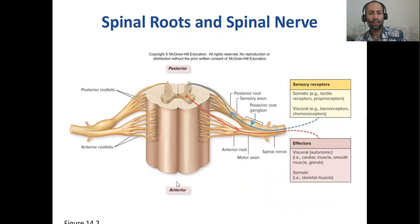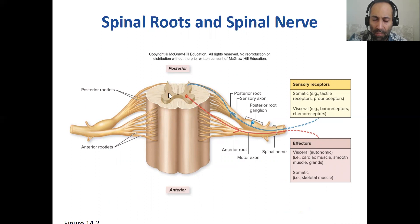Let's take a look at the spinal cord in a transverse section. The white matter is on the outside, and the gray matter is on the inside in the shape of the English letter H. That central hole in the middle is the central canal.